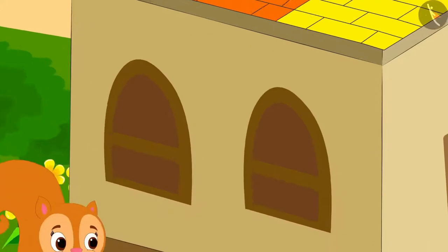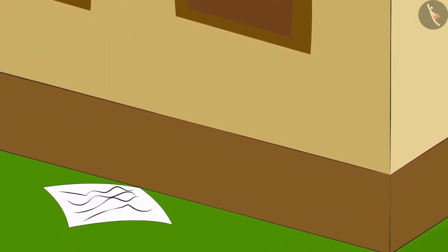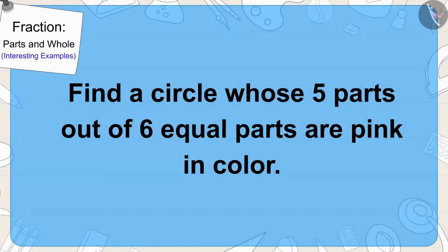Now, Chanda found her last clue near Golu's house. It was written in that clue that she has to find a circle whose five parts out of six equal parts are pink in color.